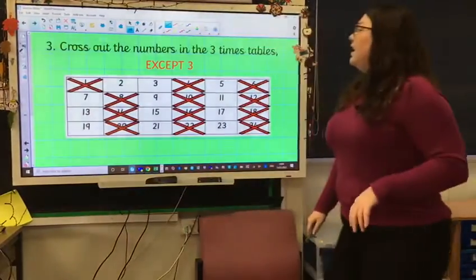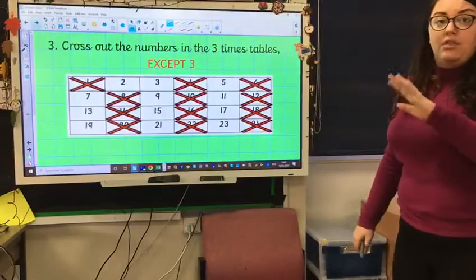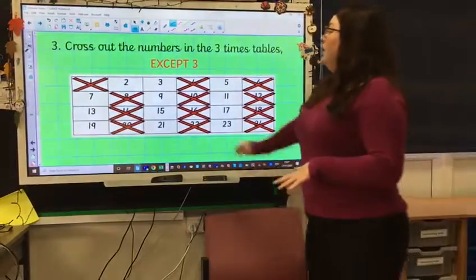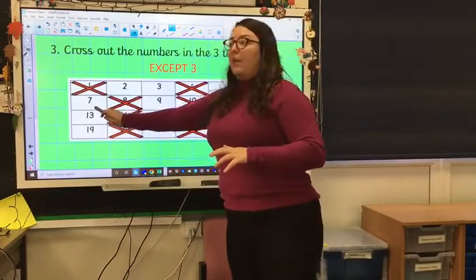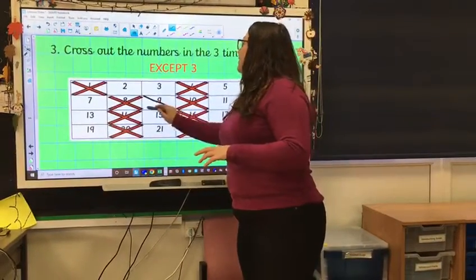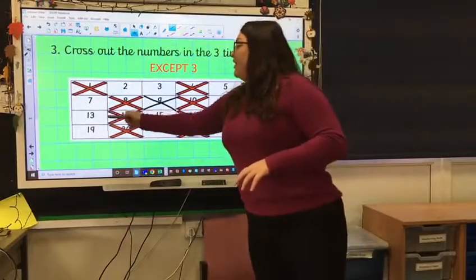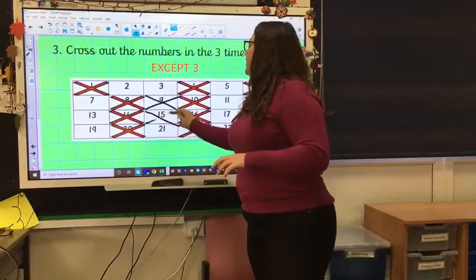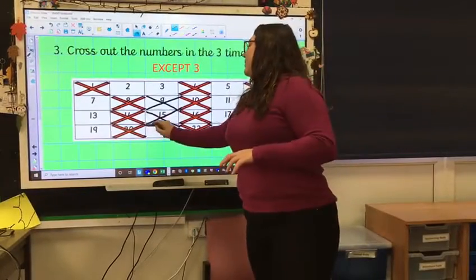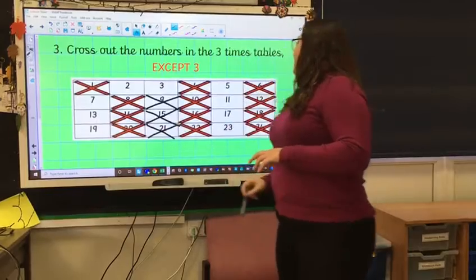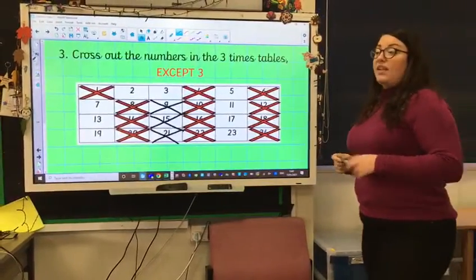Right, now I need to cross out all the numbers that are in the three times tables except for 3. Leave three alone. So, we're leaving three alone, 6 in the three times tables but 9 is. So, we'll cross it out, 11 isn't, 13 isn't but 15 is, 17 isn't, 19 isn't but 21 is. So, I've crossed out now all the numbers that are in the three times tables except for 3.